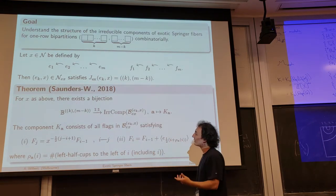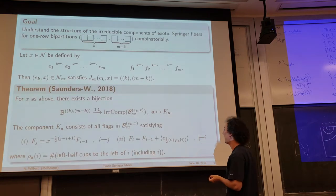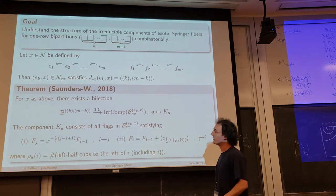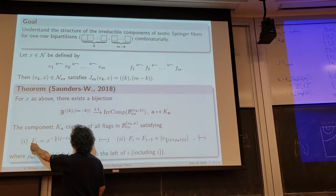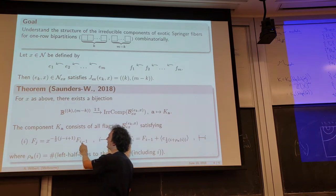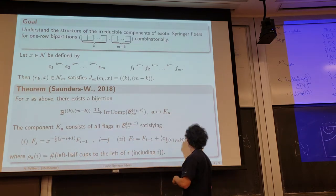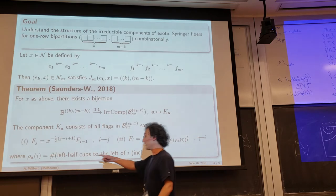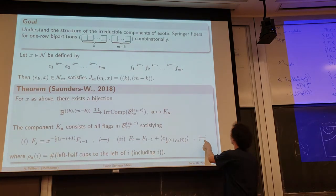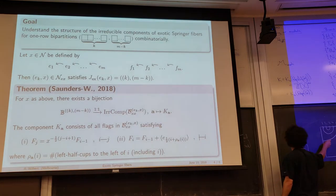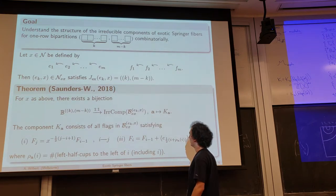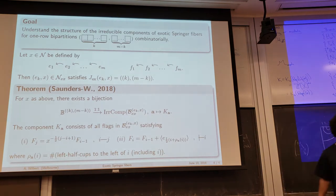Such a component K_A consists precisely of flags where, whenever I have a cup (notation ij), the space sitting at the right endpoint of such a cup is completely determined by some inverse image of a vector space sitting one step to the left endpoint of the cup. So these guys are completely determined. Whenever I have a left half cup, it is also completely determined by things that happened previously in the flag — it's basically F_{i-1} when you add one Jordan basis vector by some rule which, for the purpose of this talk, is not that important.